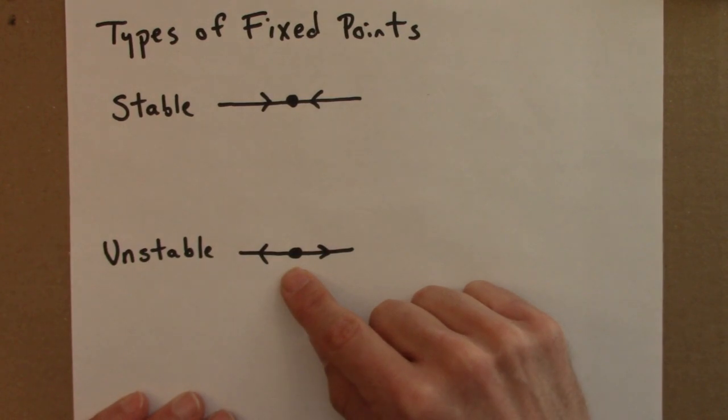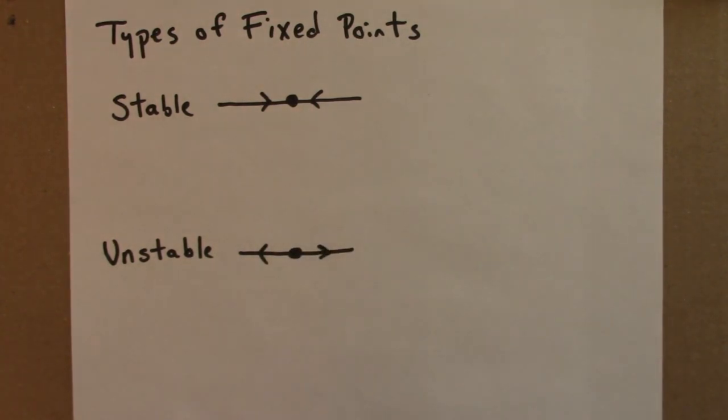Here we see that nearby points, when the function acts on them, get farther away. So first, there's some other words for these types of fixed points.